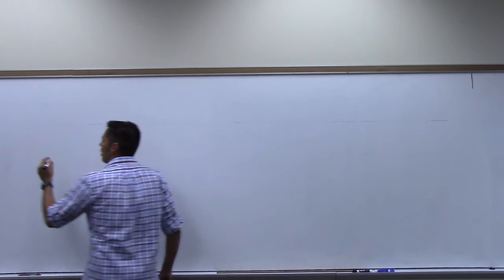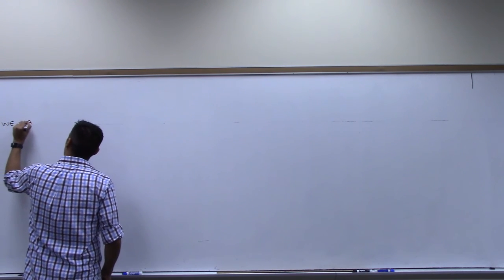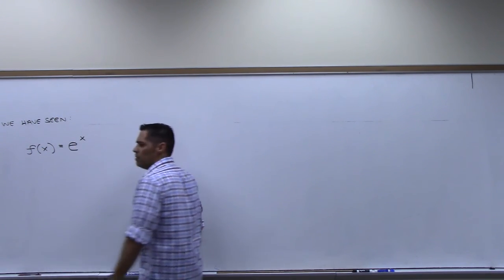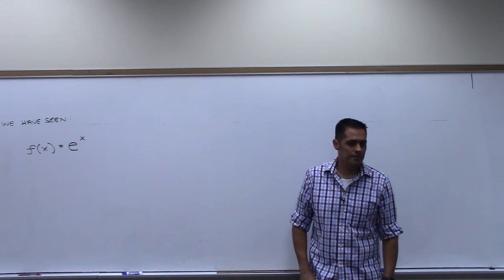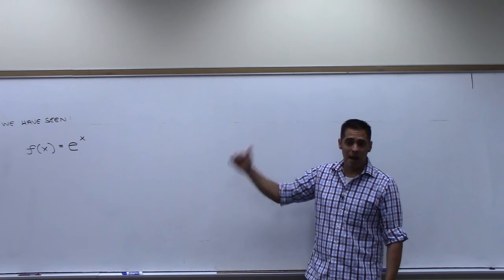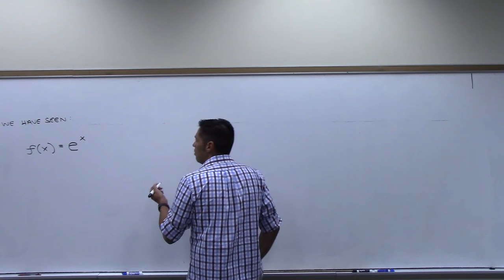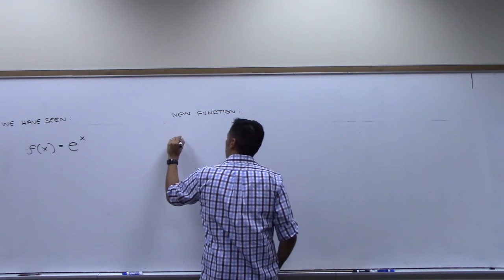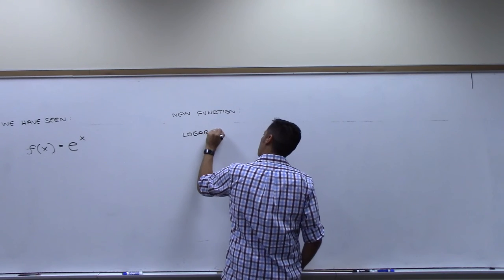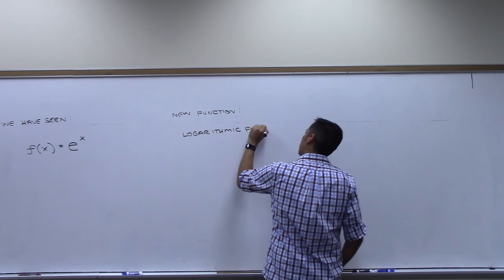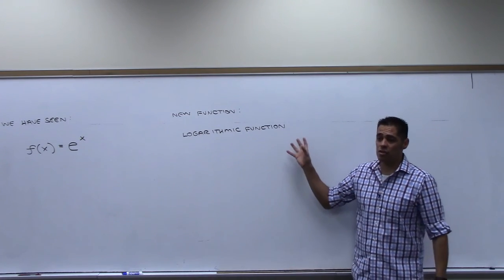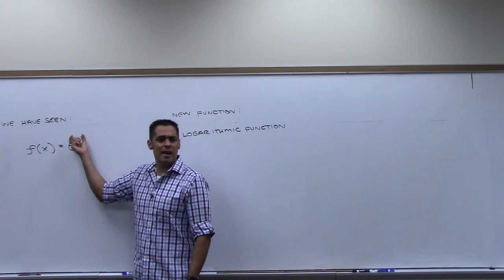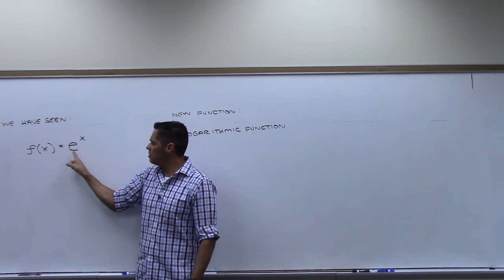So we have studied and seen already this very special function e to the x, which was called the natural exponential function. And we actually started to set up what the graph of that would look like last class. But now we're going to introduce a new function called the logarithmic function. There's a whole classification of these logarithmic functions — a big group of them. Just like exponential functions, we could have 2 to the x or 5 to the x.